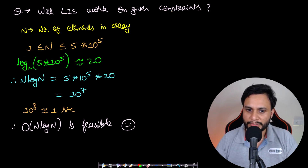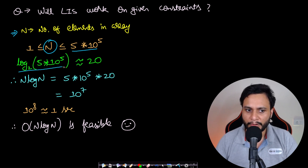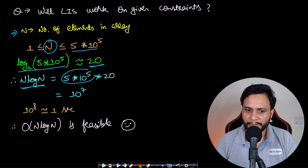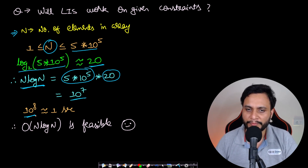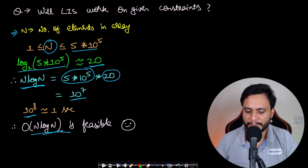Why does the LIS solution work within constraints? The array size is at most 5×10^5. log base 2 of that is about 20. So n log n ≈ 10^7, which is less than 10^8, meaning the solution runs well within one second. Space complexity is also O(1).